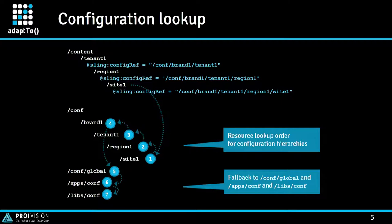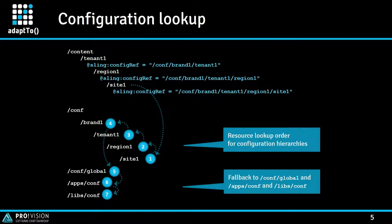A short view of how it's usable by default. You have a content tree — for example, one subtree for a tenant, for a region, and for a site — below /content. Then you have the conf tree, which was introduced some AEM releases ago to be a central place where all configuration is stored. This is used not only for editable templates, but it's also the main default entry point for context-aware configuration. You can have a tree like brand, tenant, region, site.